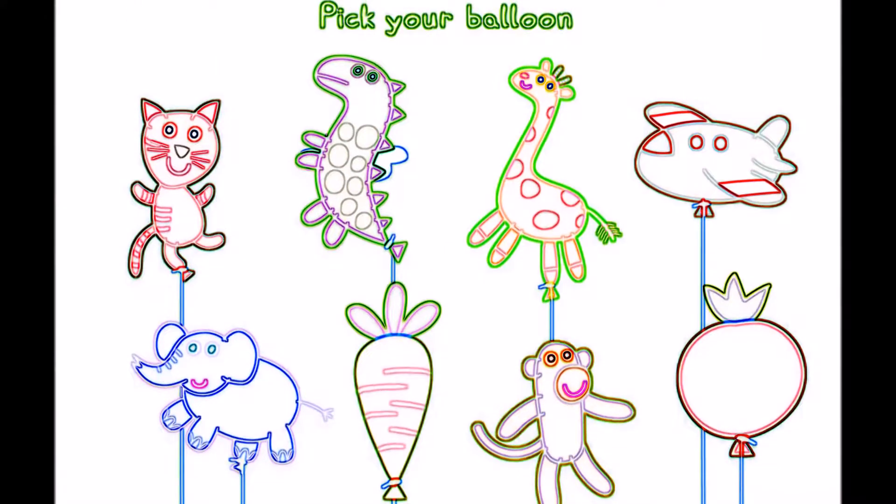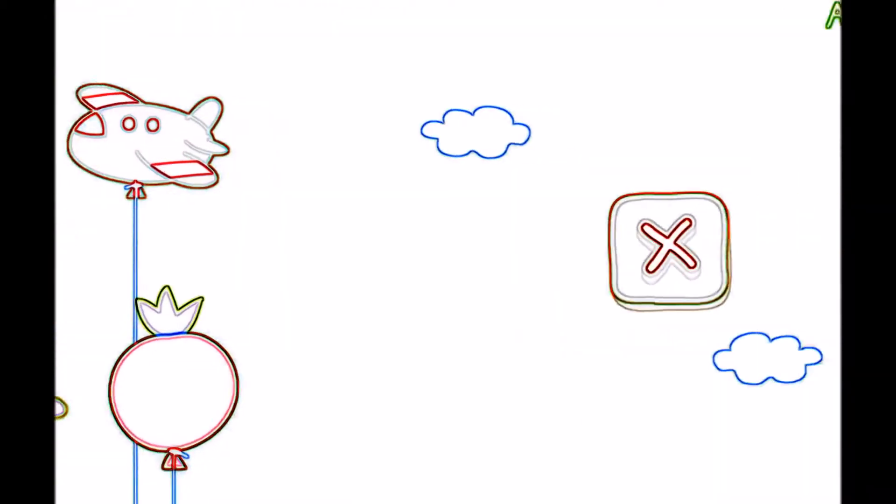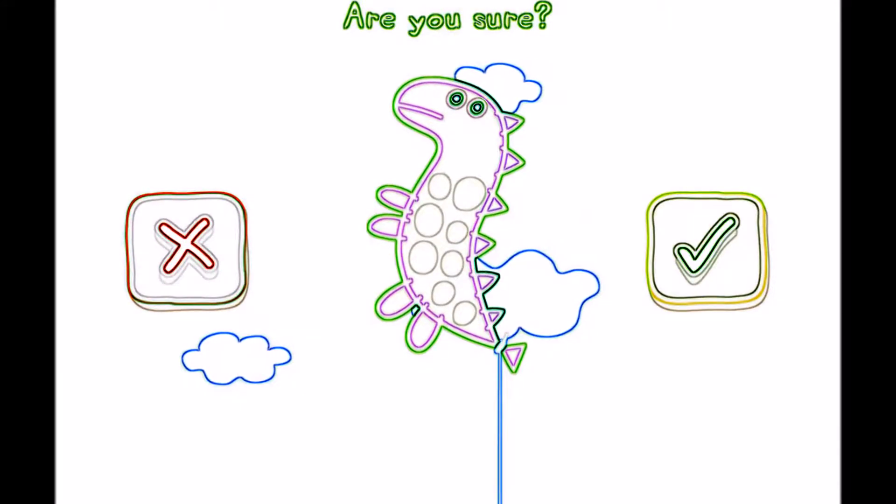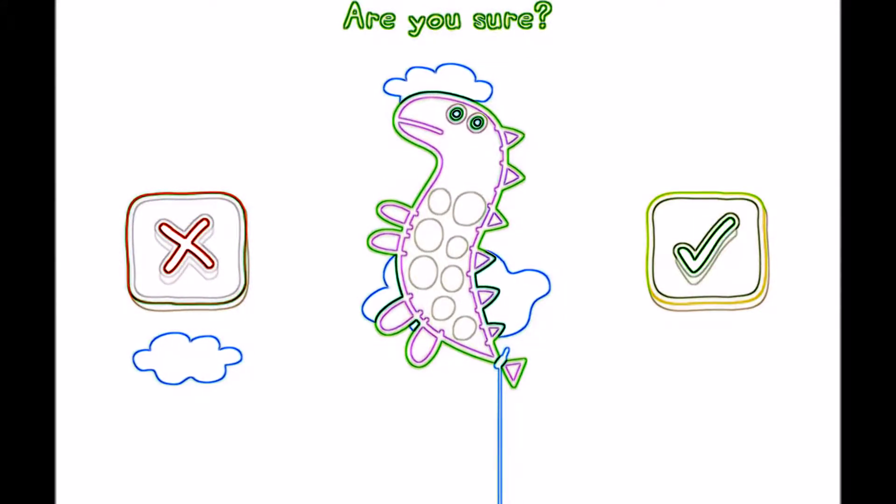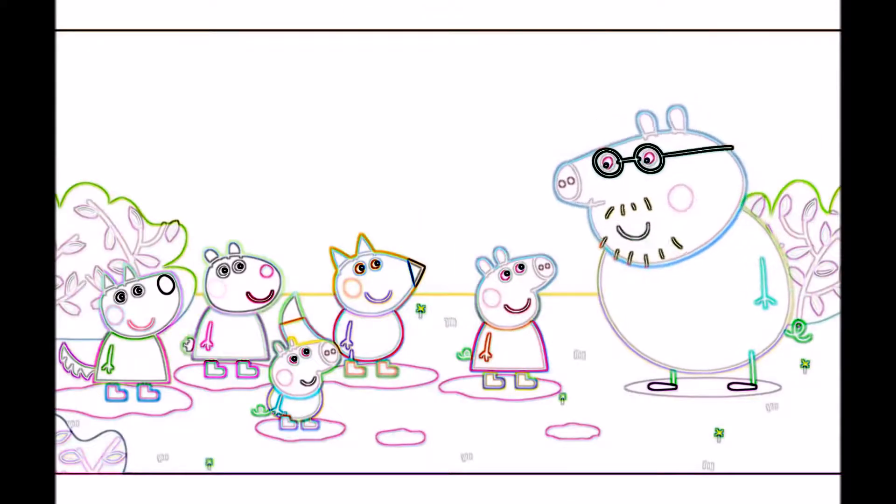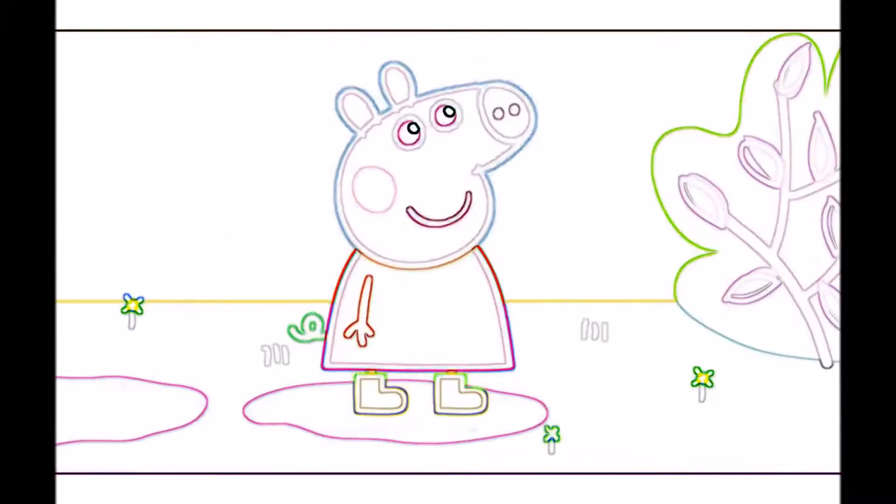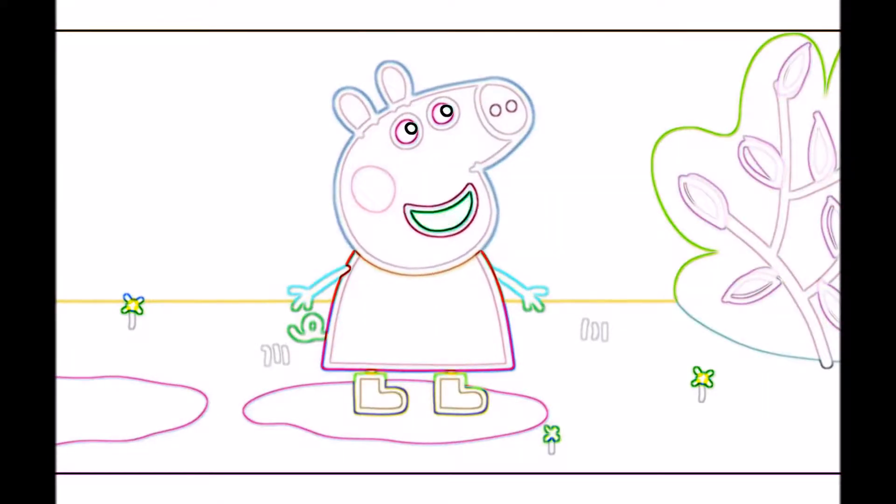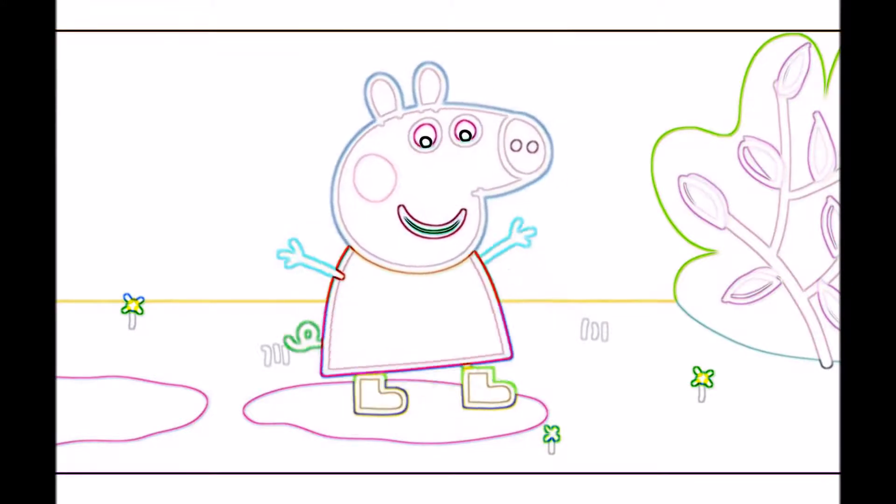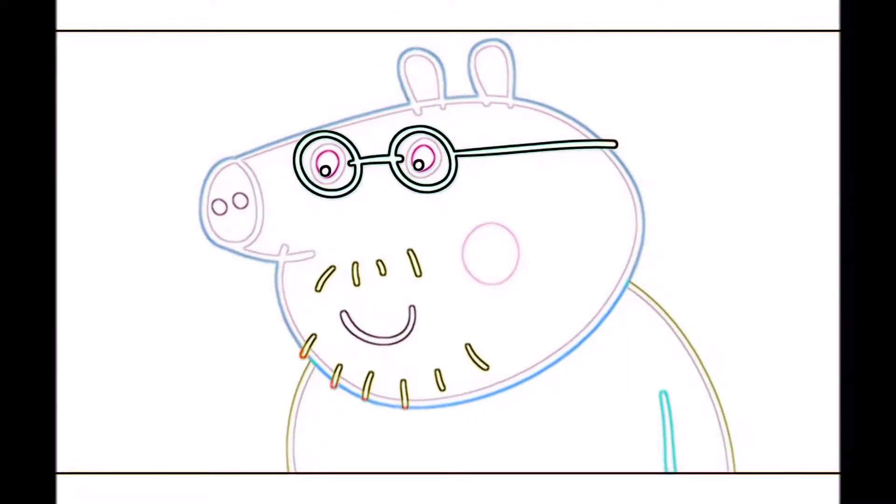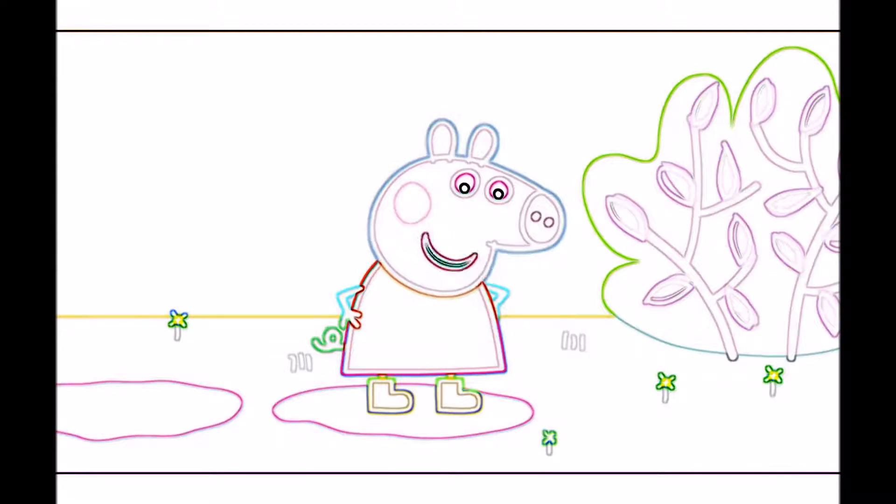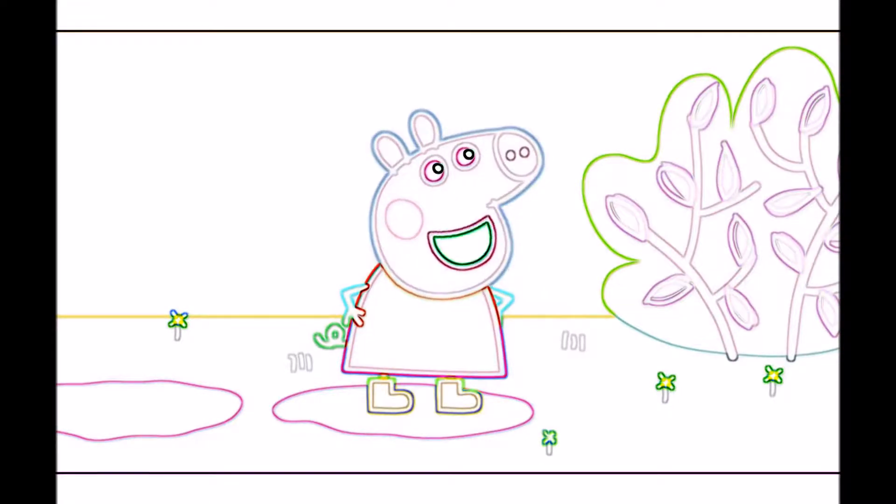Pick your favourite balloon. A dinosaur, I'm sure. Who knows the first rule of puddle jumping? If you jump in muddy puddles, you must wear your boots. That's right, Peppa. And my boots are very special because they are made of gold.